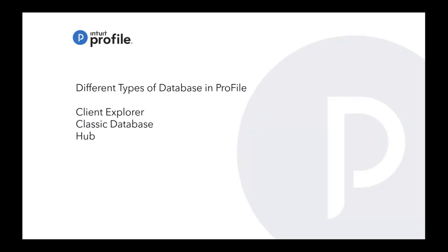There are three different types of databases within Profile. We started out with Client Explorer and Classic Database, and then we have Hub. The most common and most robust with functionalities is Client Explorer. There are a lot of features within Client Explorer, such as reports, filtering, and doing customized queries. You can also do a search within Client Explorer, so if you're looking for a lot of functionalities and features, I would suggest Client Explorer.